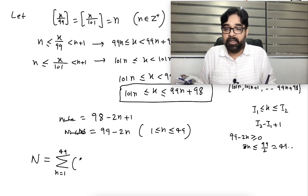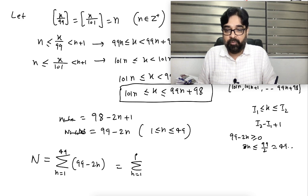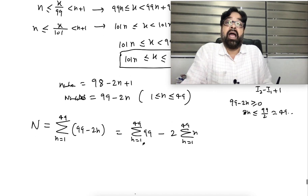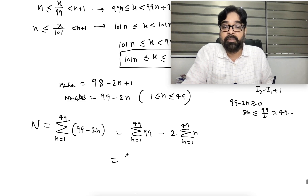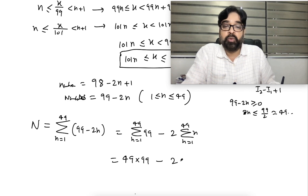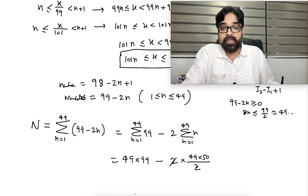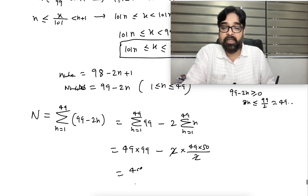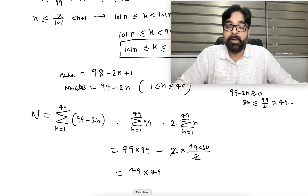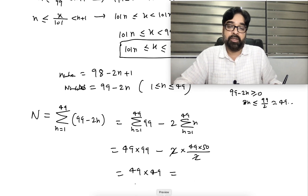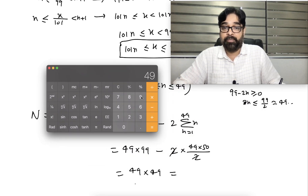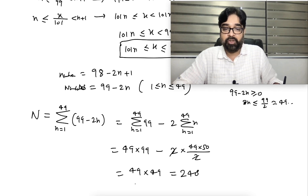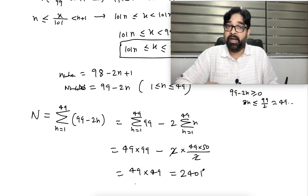To get the total count, we apply sigma: sum from n=1 to 49 of (99 minus 2n). This equals 49 times 99 minus 2 times the sum of n from 1 to 49. The sum of first 49 natural numbers is 49 times 50 divided by 2. So we get 49 into 99 minus 2 into 49 into 50 divided by 2, which simplifies to 49 into 99 minus 49 into 50, giving 49 into 49, which equals 2401.